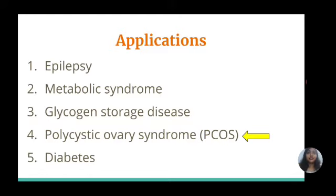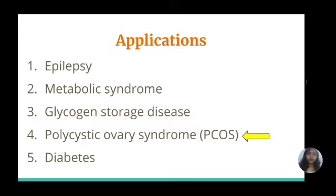Polycystic ovary syndrome, or PCOS, is a disease marked by hormonal dysfunction that often results in irregular periods and infertility. One of its hallmarks is insulin resistance, and many women with PCOS are obese and have a hard time losing weight. They are also at increased risk for type 2 diabetes. Women with PCOS following a ketogenic diet may experience weight loss, reduction in insulin levels, and improvement in reproductive hormone function.